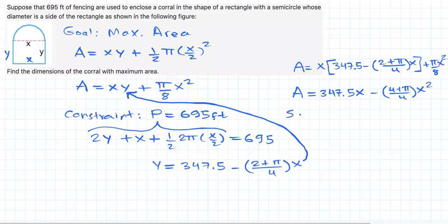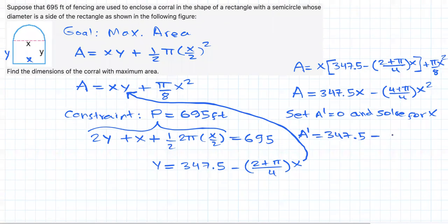Great. Now the important calculus step to maximize this quadratic function: set the derivative of the area function equal to 0 and solve for x, right? For the variable x. Great. If you do that, the derivative of area function should be equal to 347.5 minus 2 times this guy, right? But simplifying, that is just this: (4 plus pi) over 2 times x. And remember, this should be set equal to 0, right? Great.